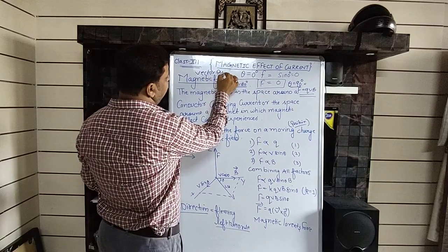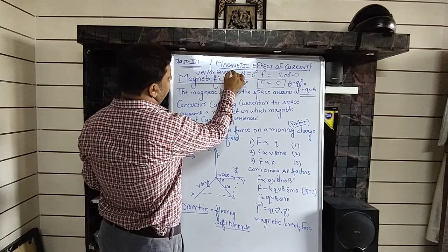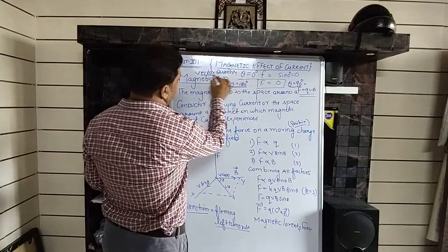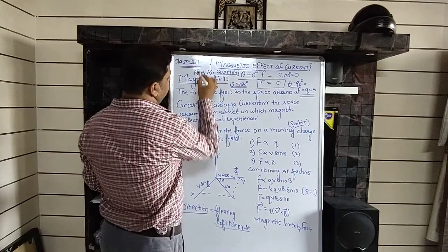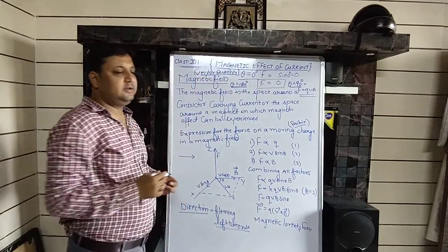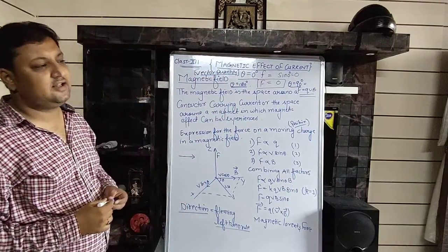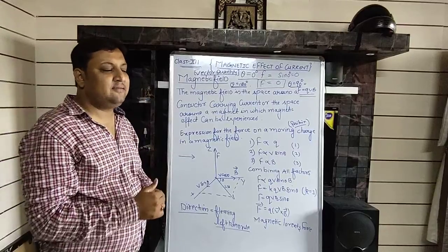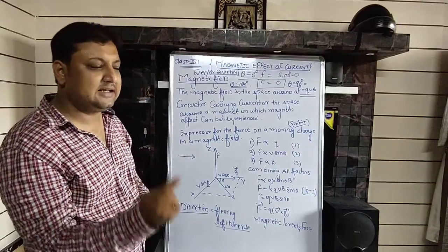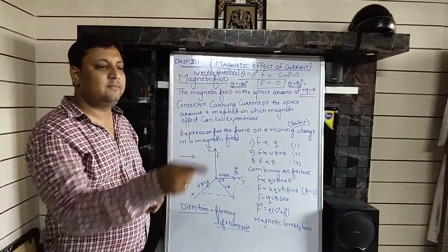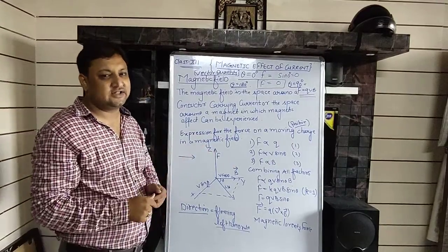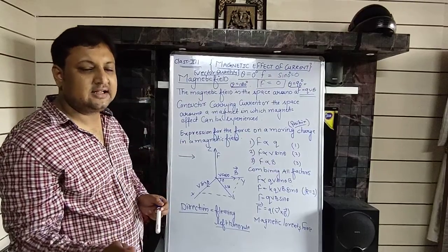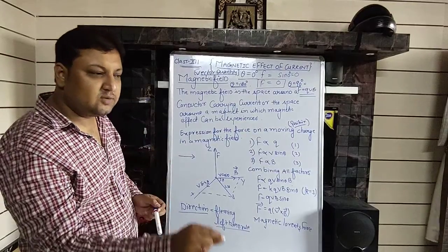Magnetic field is a vector quantity — it has both magnitude and direction. For the direction of the magnetic field, as taught in 10th standard, the north pole of a compass needle points in the direction of the magnetic field.